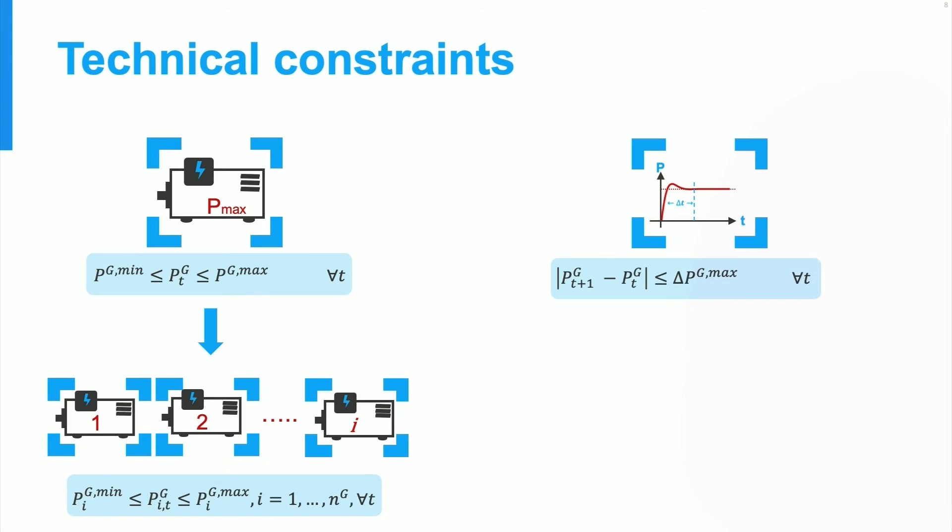And when we have not one, but multiple generators, these constraints apply to all generators, each with its own constraints. We use a subscript i to differentiate between these generators when we write the constraints. And the same is true for the ramp constraints of all generators.